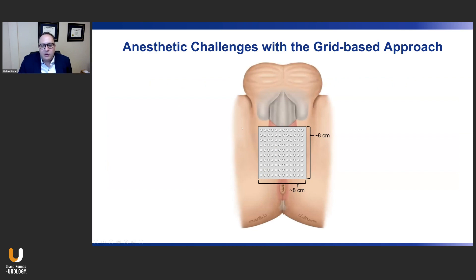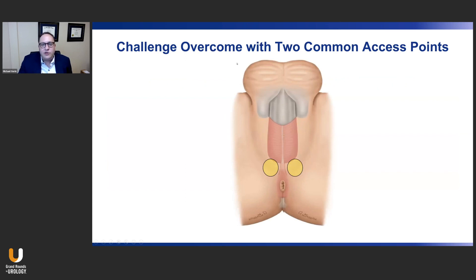Diagrammatically, an area of roughly eight centimeters by eight centimeters of perineum would need to be anesthetized for the patient to tolerate passage of the needles through the many grid holes. This challenge could be overcome with the use of two common access points to the perineum, just north of the rectum. If you could perform the biopsy where needles only go through these small areas of skin, this could be performed much more tolerably under local anesthesia — translating the transperineal procedure from the operating room into the clinic.